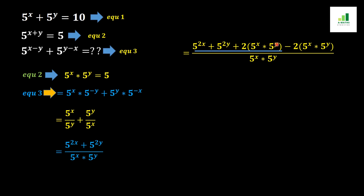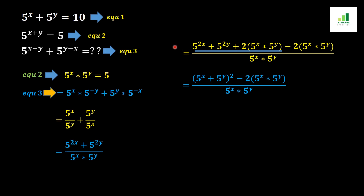We can now see that the numerator matches the (a + b)² formula, since a² plus b² plus 2ab equals (a + b)². So we pack 5^(2x) plus 5^(2y) plus 2 · 5^x · 5^y as (5^x + 5^y)², and the remaining term minus 2 · 5^x · 5^y stays with the denominator 5^x · 5^y.